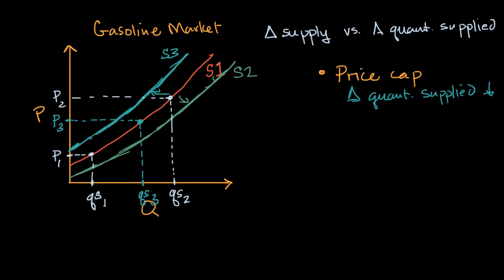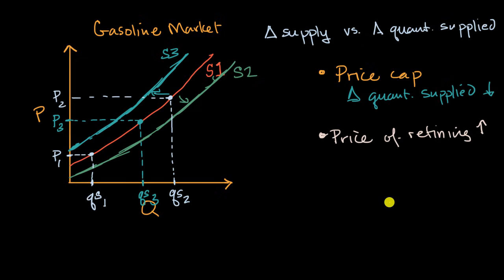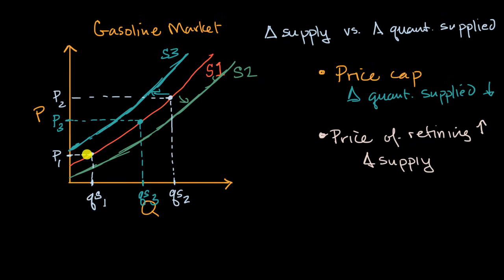Now let's give another scenario. Let's say the price of refining gas goes up. Would that be a change in supply, or a change in quantity supplied? This is something that would increase the cost of producing gasoline — which is refined from oil — across the board, regardless of what price we're at. So this would be a general shift — a change in supply. To think about which way the entire supply curve would shift, think about it from a supplier's point of view.